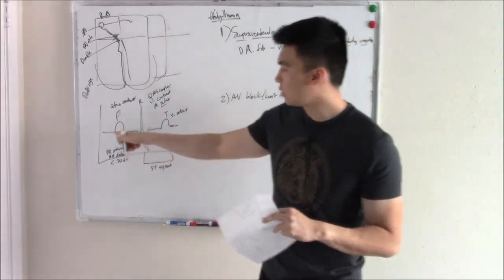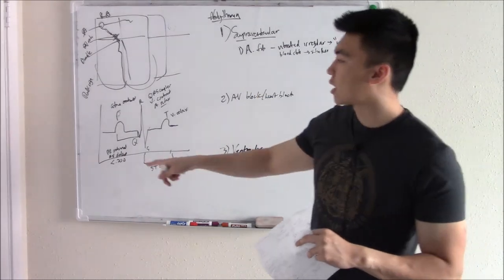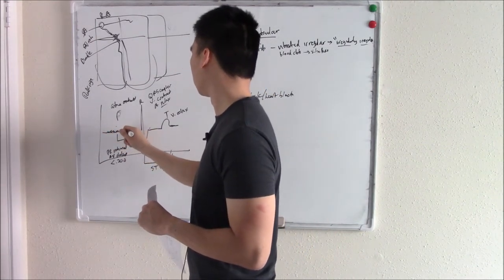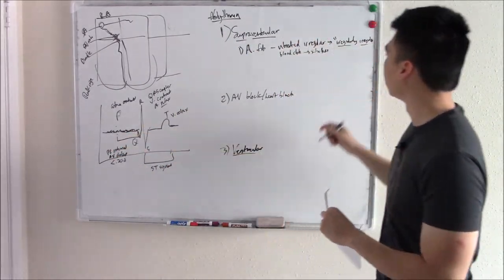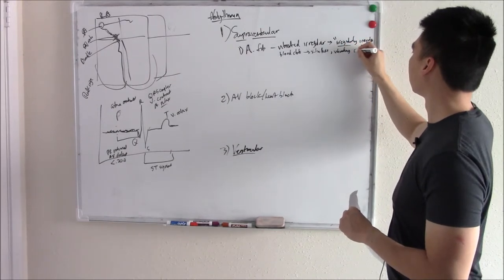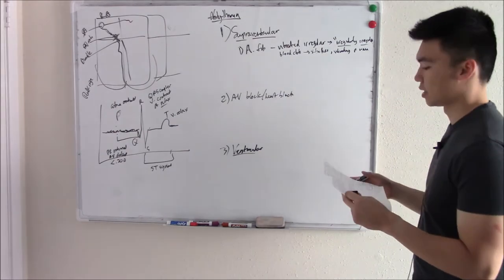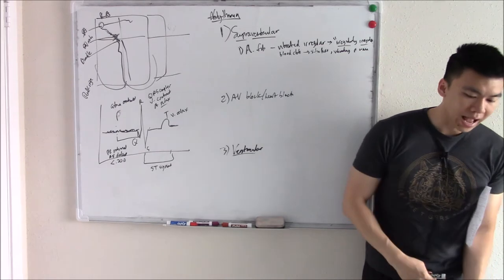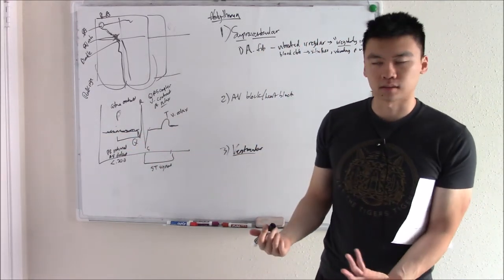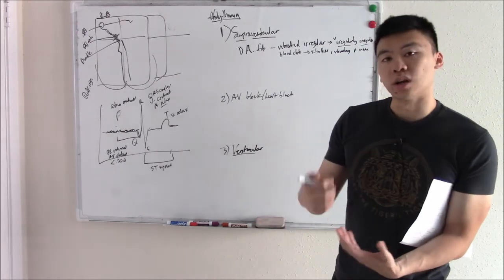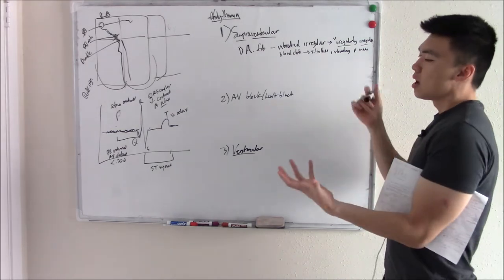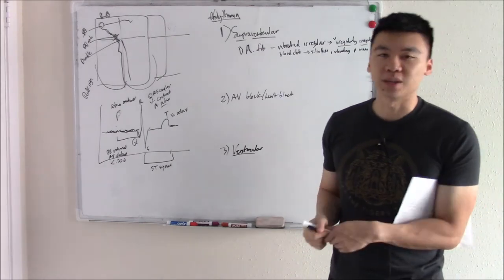On an ECG, the P wave measures atrial contraction. If the atria are just vibrating instead of contracting properly, you won't get nice clear P waves — instead you'll see an irregular, chaotic baseline. They love to test this: they might show the ECG and ask what the patient is at risk for — stroke, blood clots. Or they might ask what you want to do: give anticoagulants. If you feel the pulse, it feels irregularly irregular.